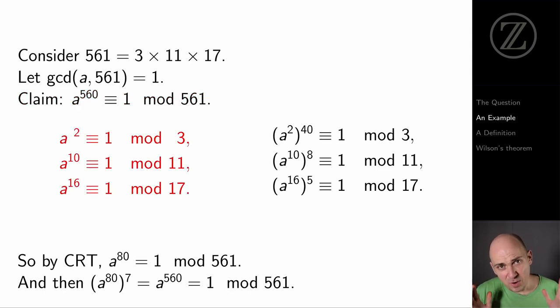Now 3, 11, and 17 are prime numbers, and consequently by Fermat's Little Theorem, a squared is congruent to 1 modulo 3, a to the 10th power is congruent to 1 modulo 11, and a to the 16th power is congruent to 1 modulo 17. Now I'll take that first congruence, a squared is congruent to 1 modulo 3, and I'll raise both sides to the 40th power to conclude that a to the 80th power is congruent to 1 modulo 3.